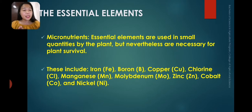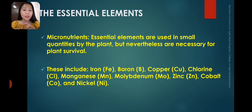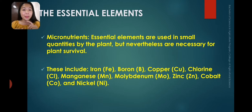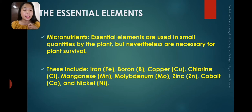We also have micronutrients — essential nutrients used in small quantities by the plant. Nevertheless, they are necessary for survival. Even if only one element is missing, the plant cannot complete its life cycle. These micronutrients include iron, boron, copper, chlorine, manganese, molybdenum, zinc, cobalt, and nickel — all very important for the plants.